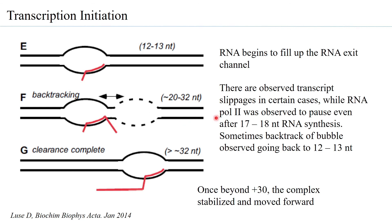What has been observed is that if RNA pol 2 is able to synthesize greater than 32 nucleotides, the complex becomes stable. At that point, promoter clearance is considered complete and RNA pol 2 will move on to elongate the synthesis, continuing to synthesize RNA as a more stable complex.